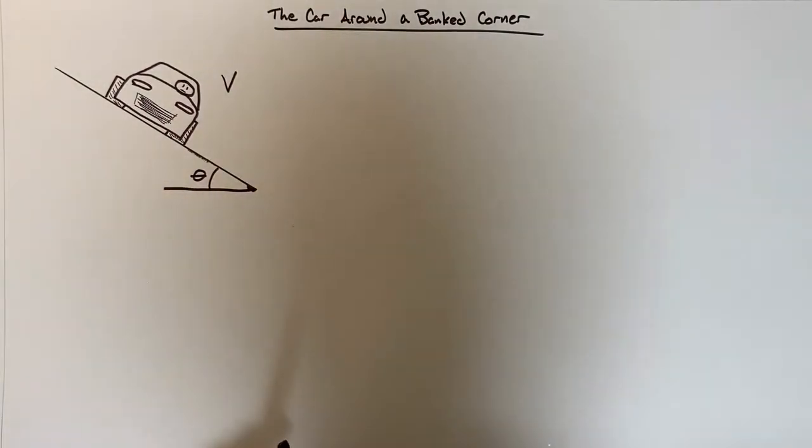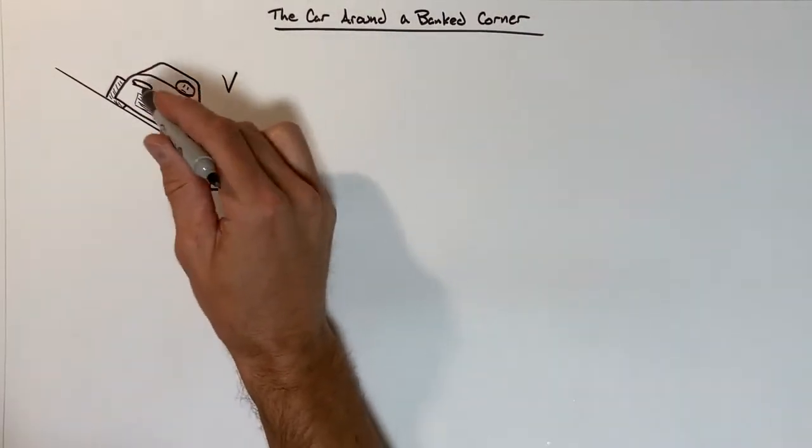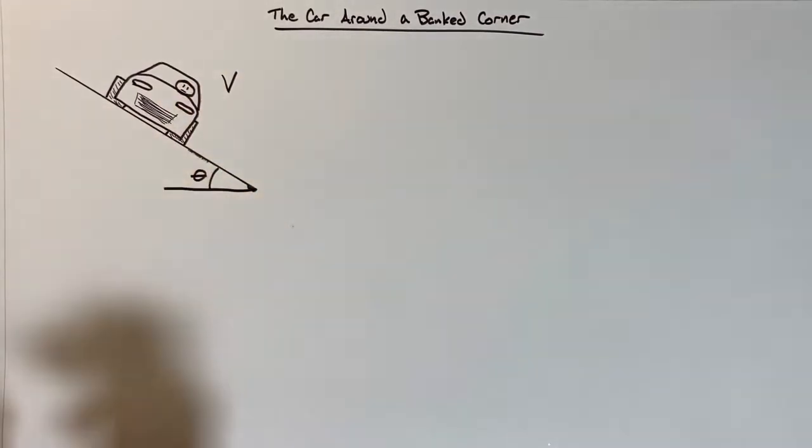If we're given the value of theta, that is the bank angle of the corner, we want to be able to turn around and solve for the velocity—how fast the car should travel around the corner so that there doesn't need to be any friction.